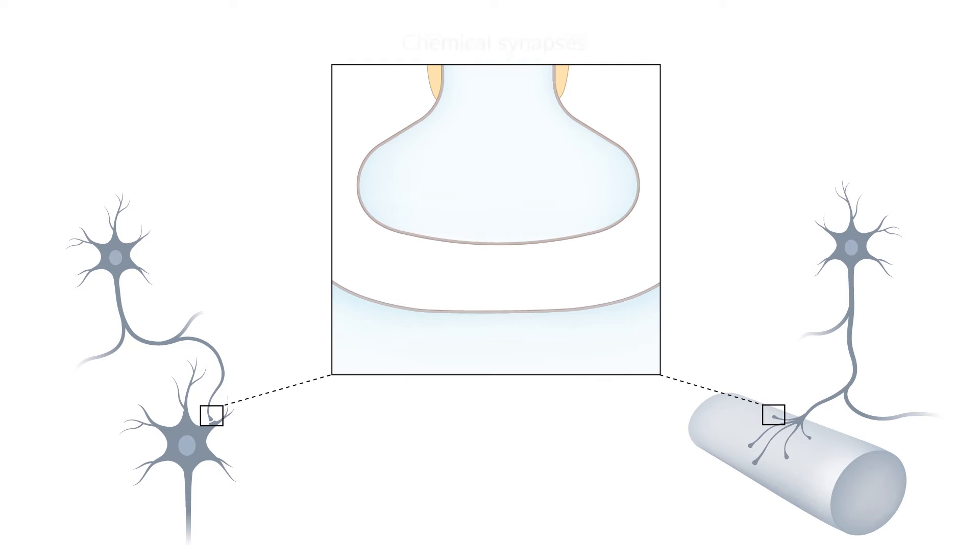Chemical synapses are the most common type of synapses in the body. To transmit information from one neuron to another or a target organ, a chemical substance termed transmitter is used. Depending on the released transmitter, chemical synapses can have either an excitatory or inhibitory effect on downstream cells.